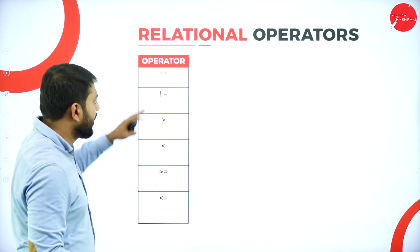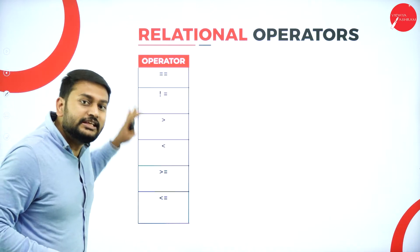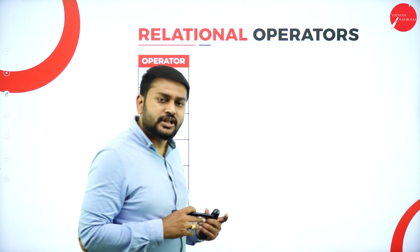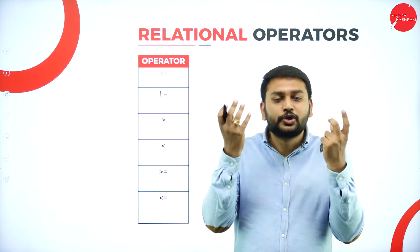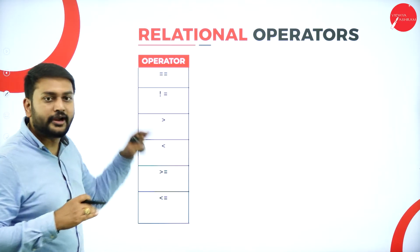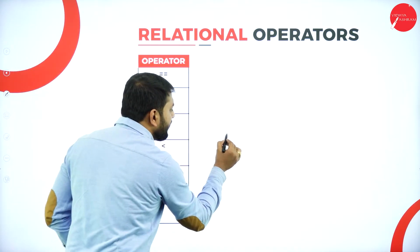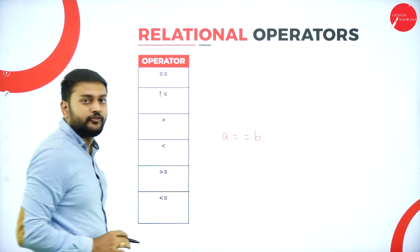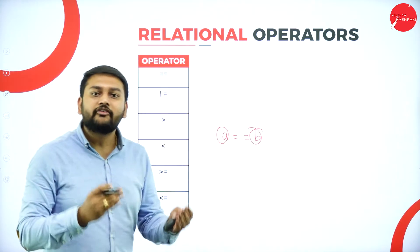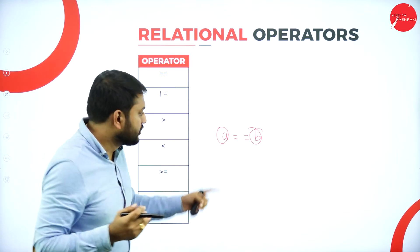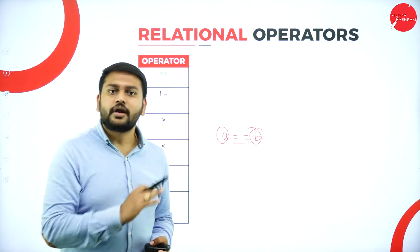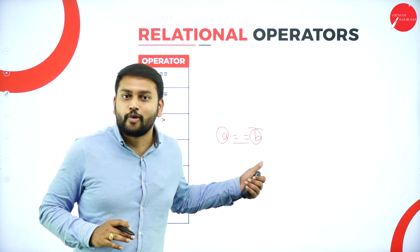Moving forward to the next important operator — the relational operator. Why do we need relational operators? To understand the relationship between two variables. The first relational operator is == (equal to). For example, a == b means I am comparing a with b — checking if both have the same value. The == operator helps me compare both; that's what I am doing with the == operator.